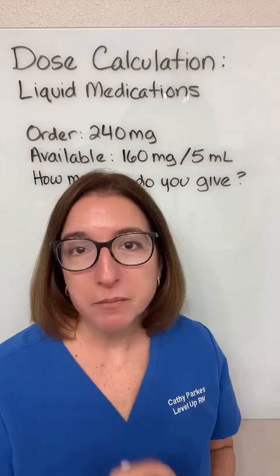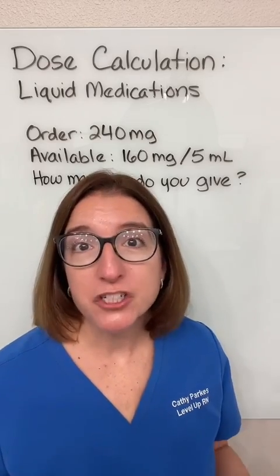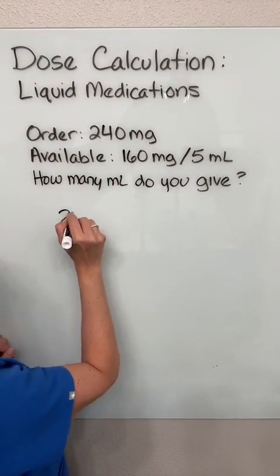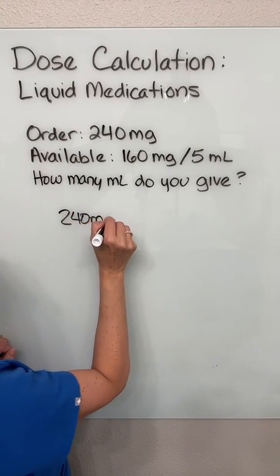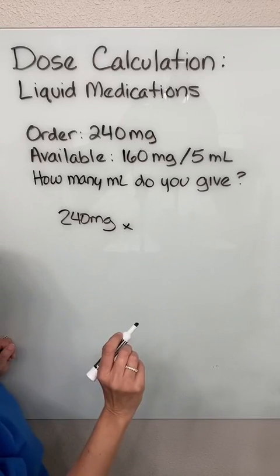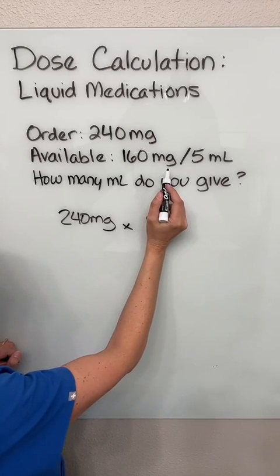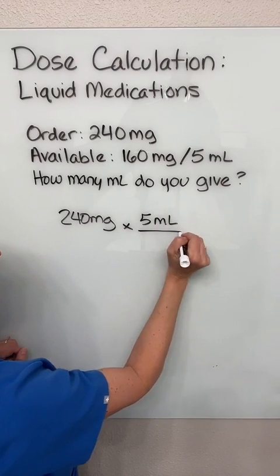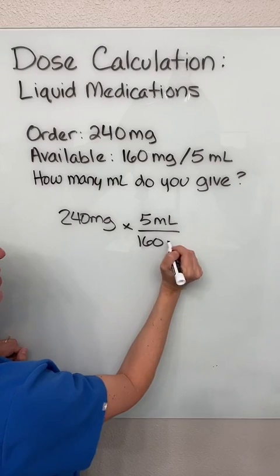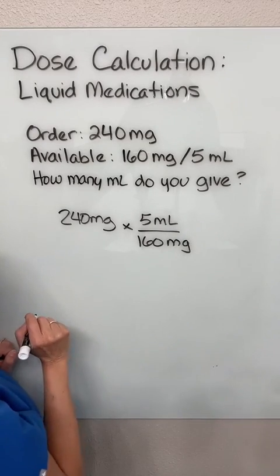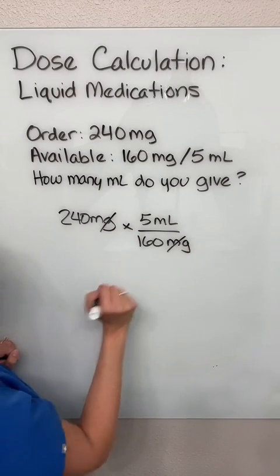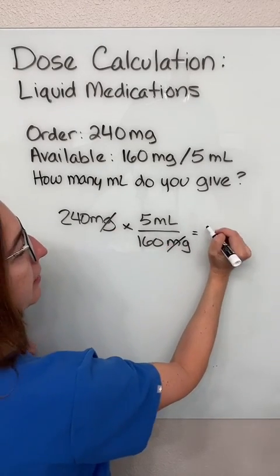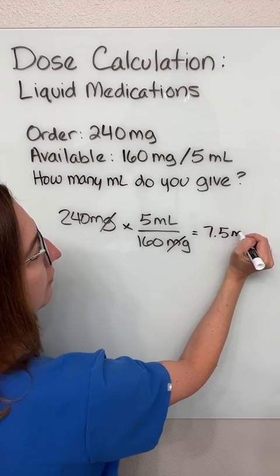Let's first solve this problem using dimensional analysis. If I take my ordered dose, which is 240 milligrams, and I multiply it by the available concentration, making sure to put my milliliters on top and my milligrams on bottom, such that my milligrams cross off, I end up with 7.5 milliliters.